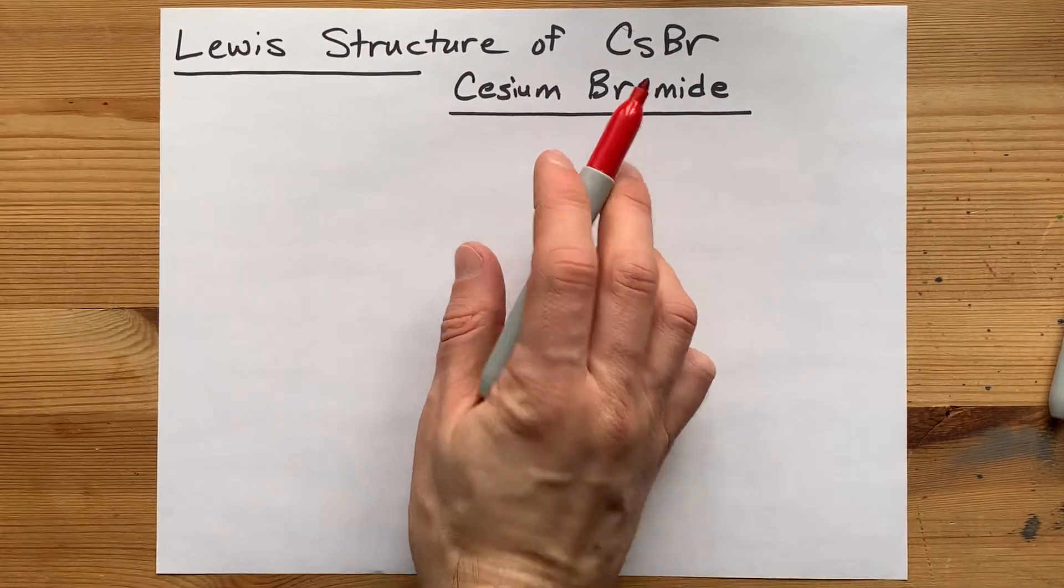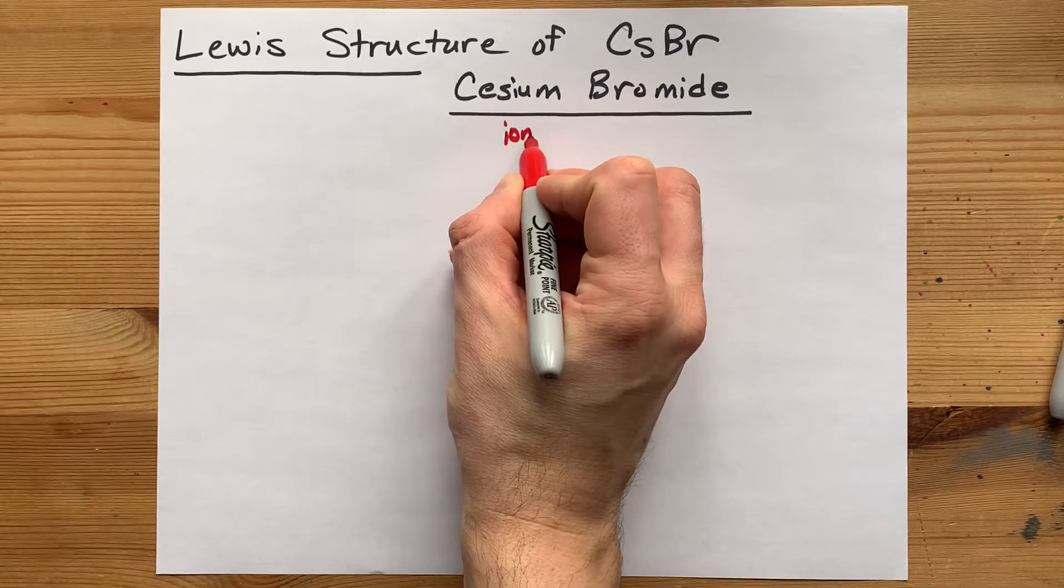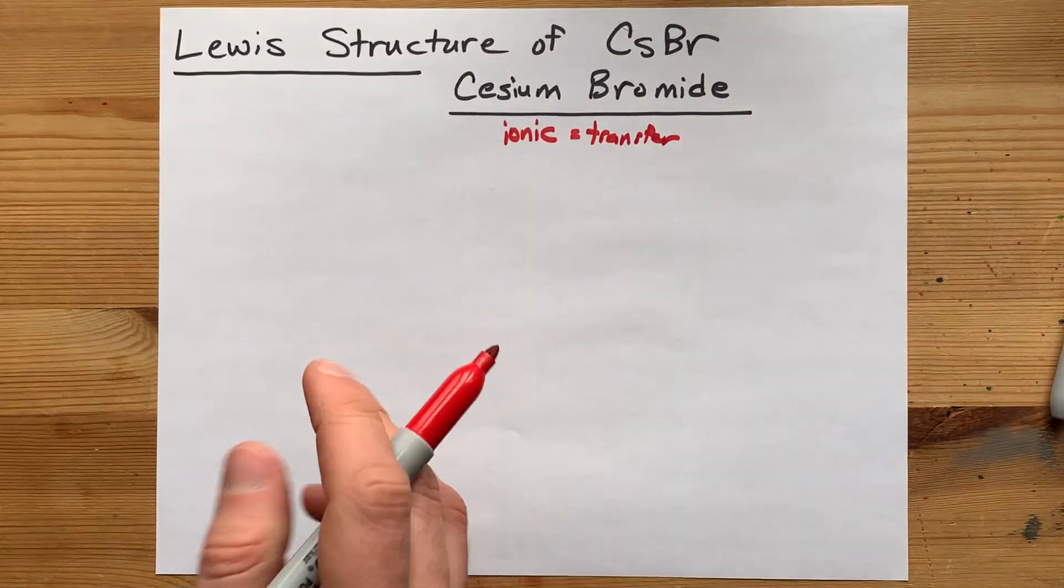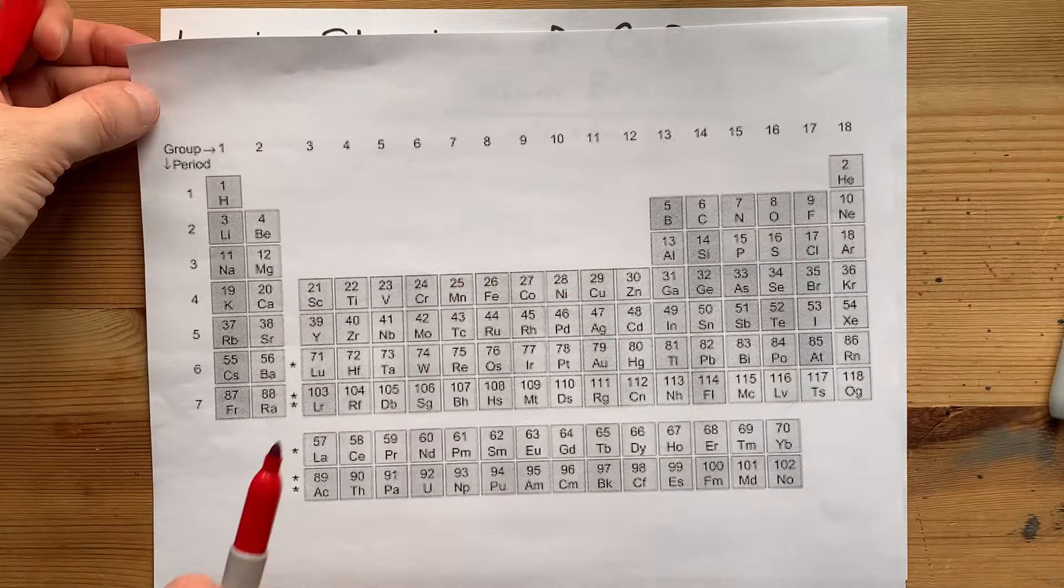When a metal and a non-metal bond together, you get an ionic compound, which is a transfer of electrons from the metal to the non-metal. Let's see how that's going to work.